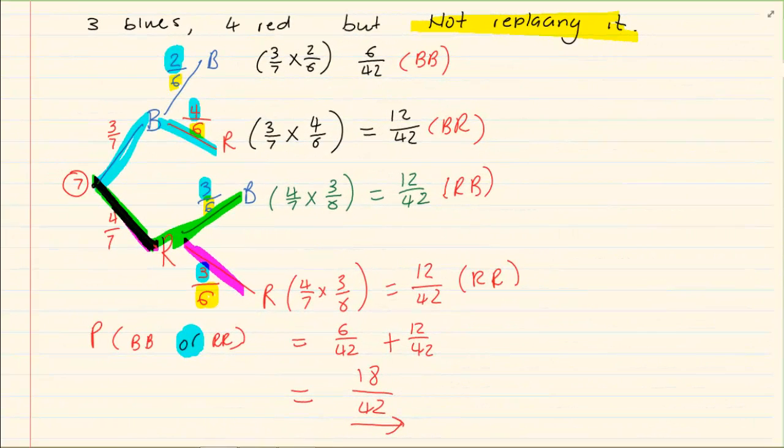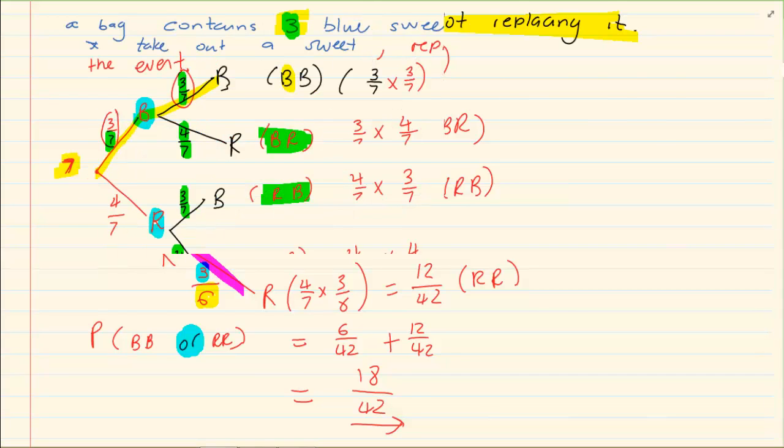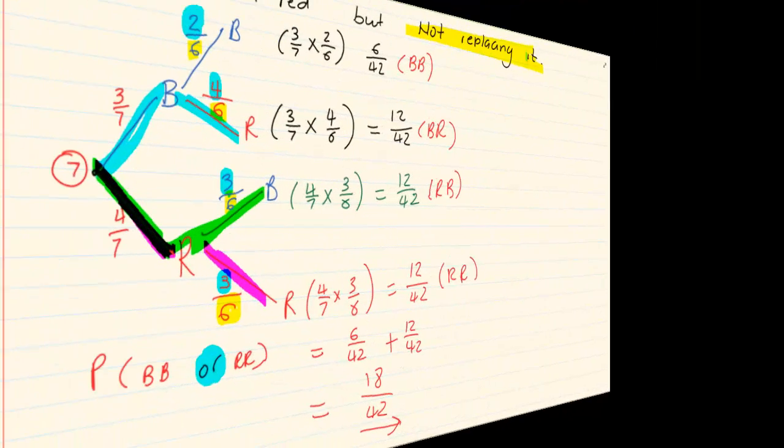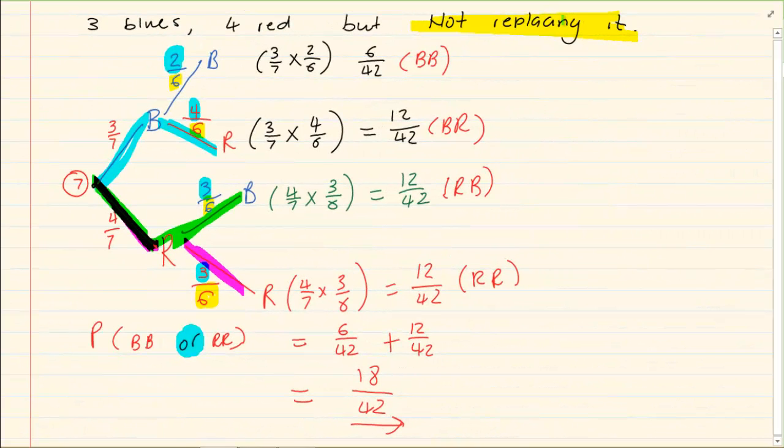When we are working with independent or dependent events, it is usually happening when there are two events. Now we had discussed two events under the tree diagrams. So what happened was you did one event, you took out something and then you did another event. And when I had done it, I had done it in two styles. One was where I took out like a blue suite and then I replaced it back. And the second style I did was that I did not replace it back.